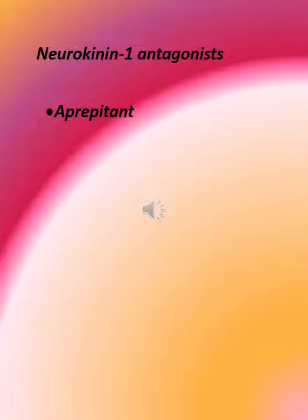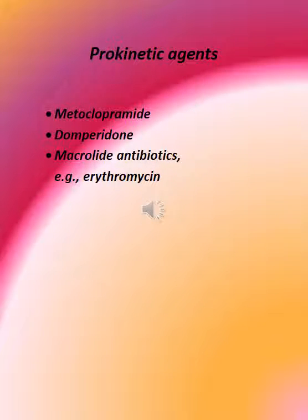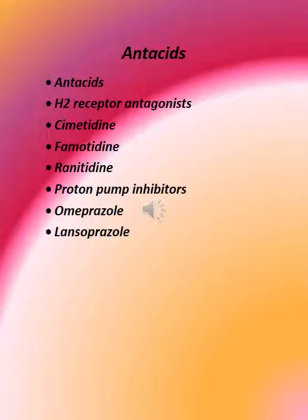Prokinetic agents include: metoclopramide, domperidone, and macrolide antibiotics such as erythromycin. Antacids include: antacids, H-2 receptor antagonists such as cimetidine and famotidine.